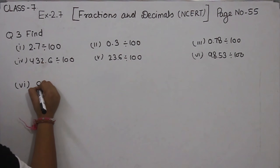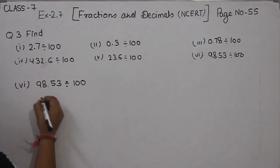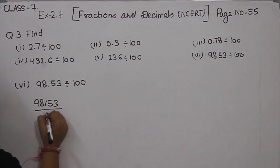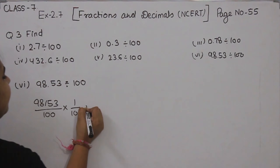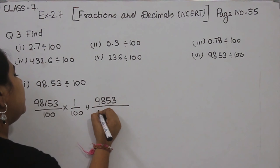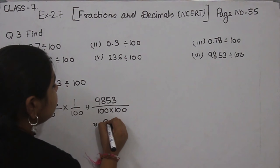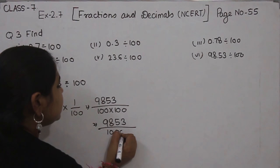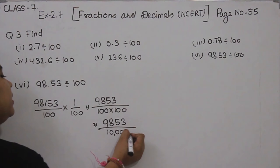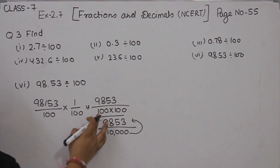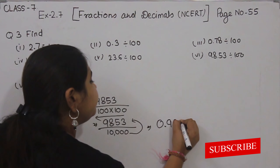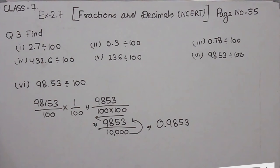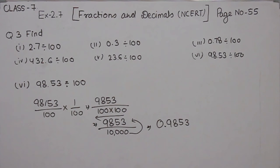Part 6: 98.53 divided by 100. First, we are going to remove the decimal. Now multiply 1 by 100. 9853 in the numerator, and the denominator is 10,000 — that is 4 zeros. So we are going to convert these zeros to the decimal, putting the decimal from right to left after 4 digits. So the answer is 0.9853. With this, we have completed Question number 3. In the next video, we are going to start with Question number 4, Exercise 2.7.